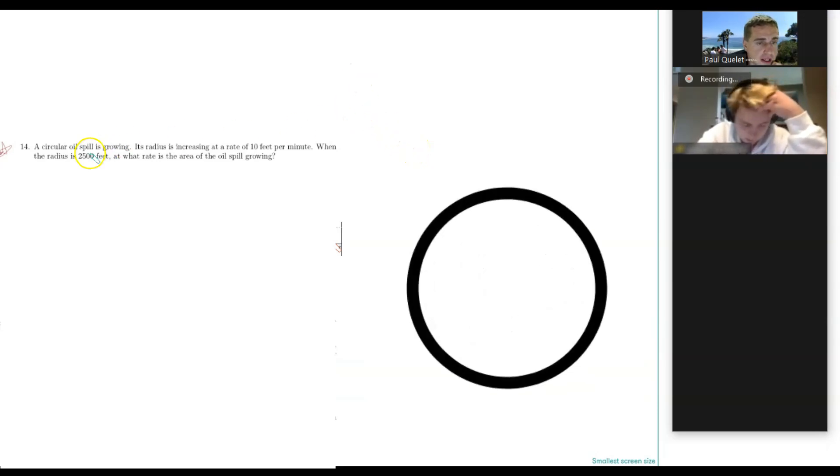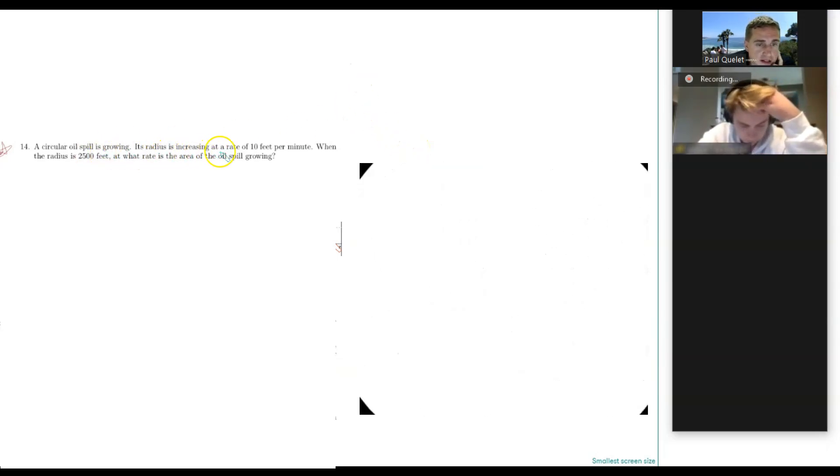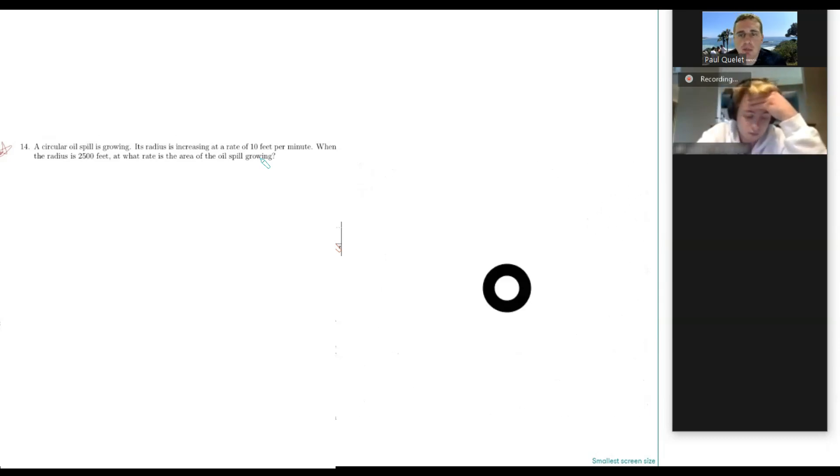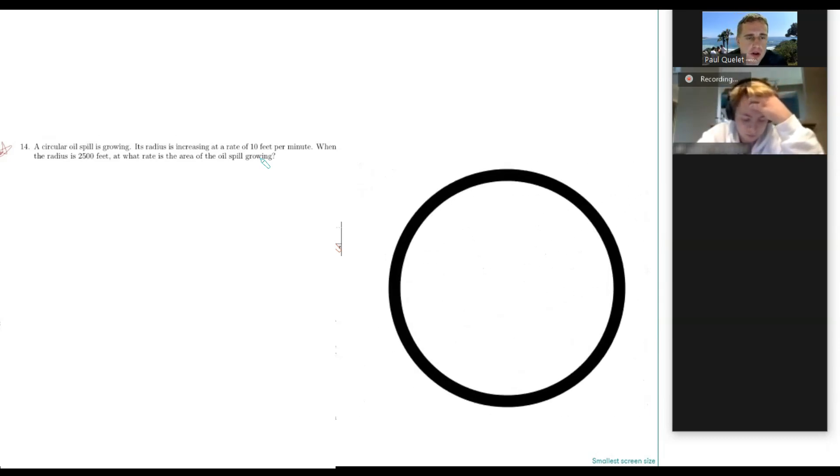A circular oil spill is growing. Its radius is increasing at a rate of 10 feet per minute. When the radius is 2,500 feet, what rate is the area of the oil spill growing? This is what we call a related rates problem. This is a classic application problem from calculus one.